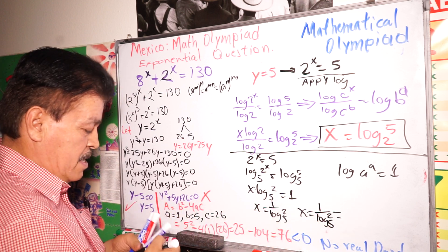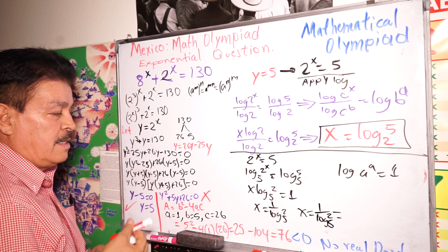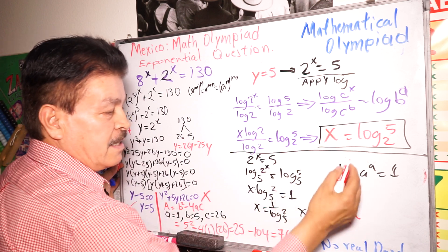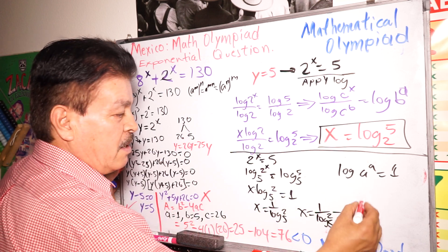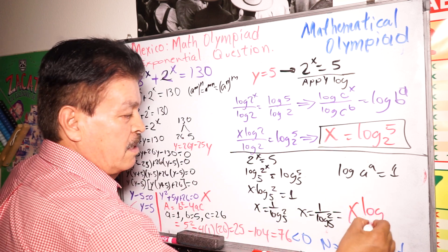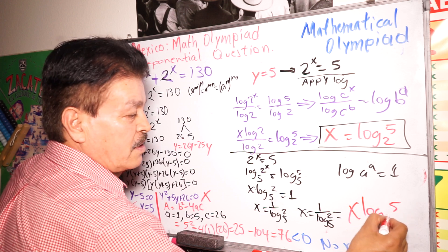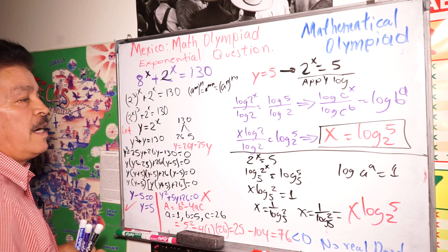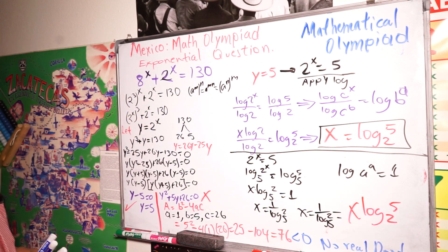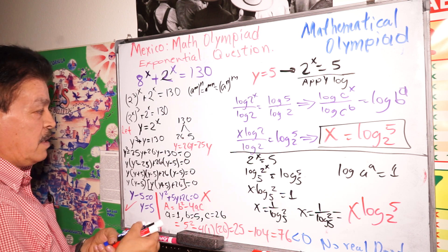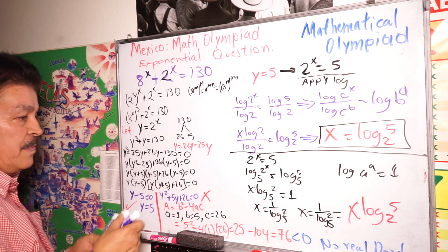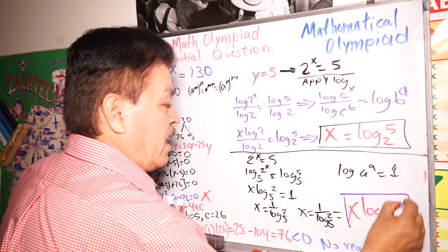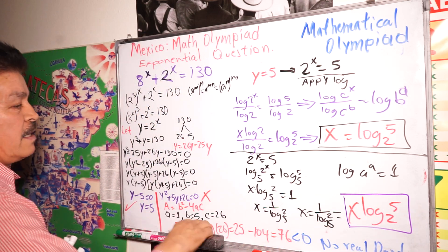This is the same thing — X equals log base 5 of 2, or equivalently log 2 to the base 5. That's another way to express the answer. Let's check if this is right.